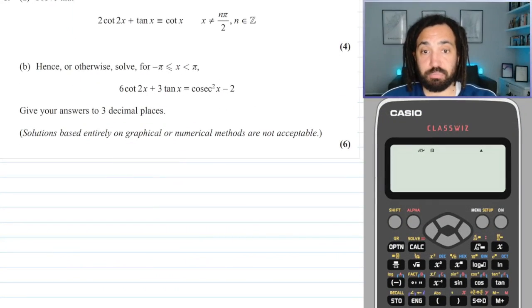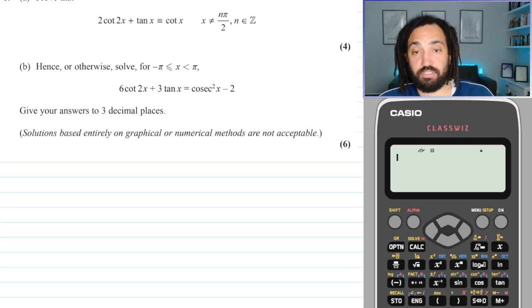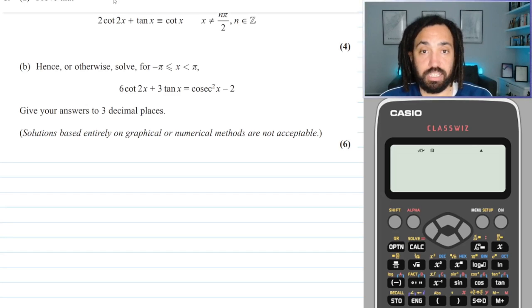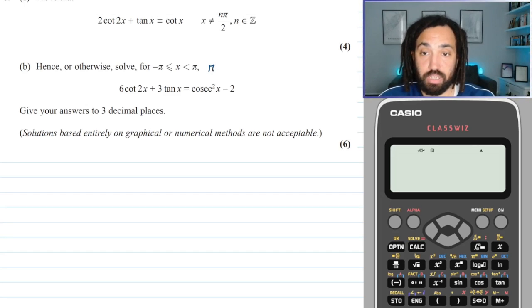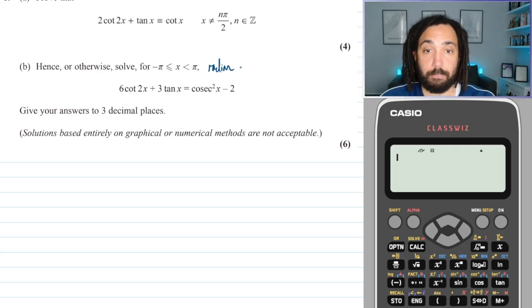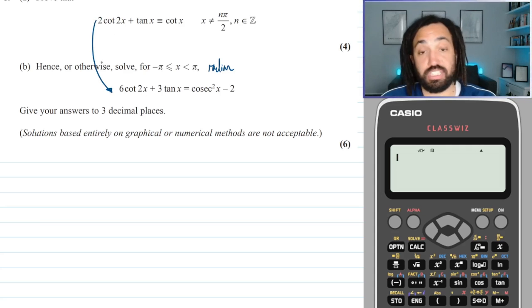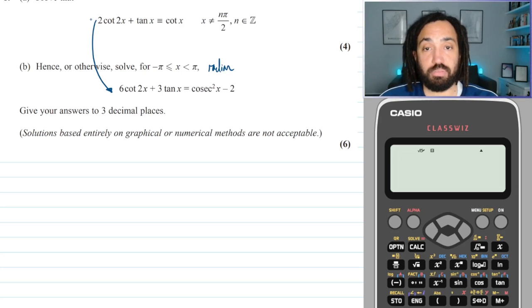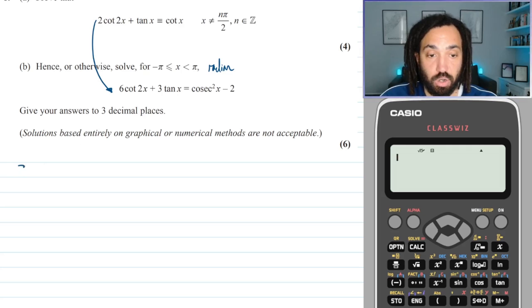Okay, so next part we need to solve this equation for x in between minus pi and pi so we need to make sure we're in radian mode in order to do this. And you can see here that this is just 3 times, well there's a difference of a factor of 3 there. So if I multiply this identity by 3 then it tells me the left hand side of this equation should be equivalent to 3 cot.